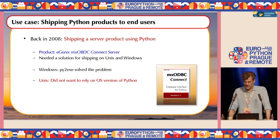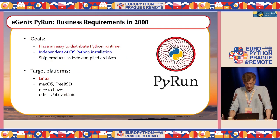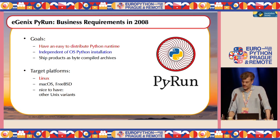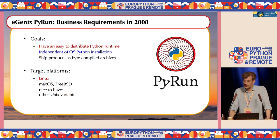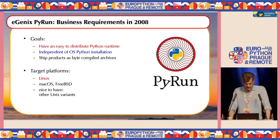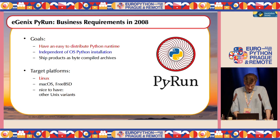So we wanted to make sure the Python installation used on the server side was managed by us. We wanted to ship Python — the complete Python installation — along with the product. These were the business requirements we had back in 2008: everything completely independent of the OS Python installation, very easy to distribute, easy to put on the server. We wanted to support mostly Linux but also other platforms like Mac OS, FreeBSD, and in those days also Solaris.